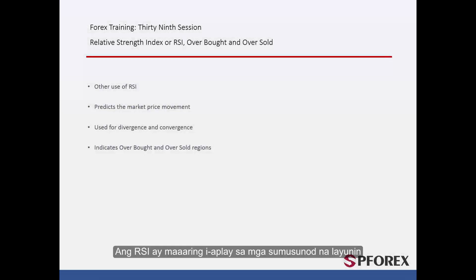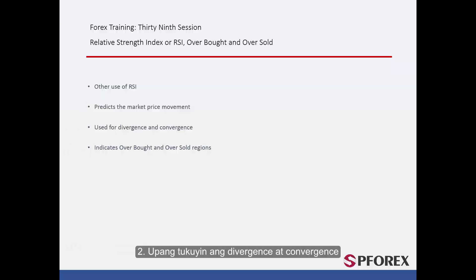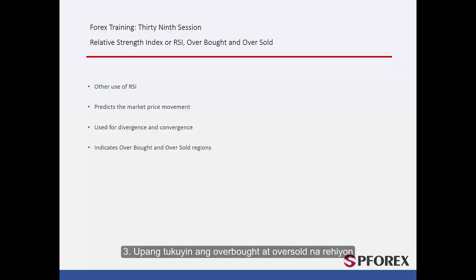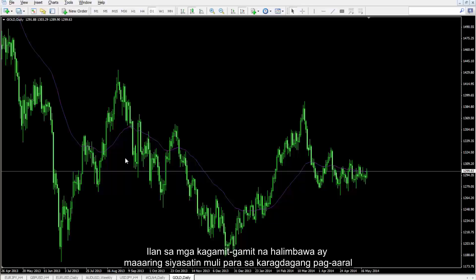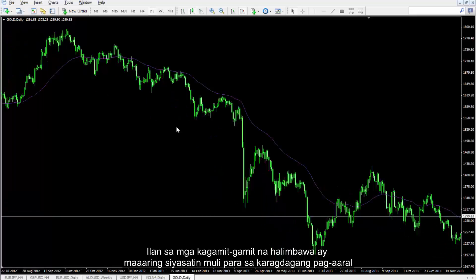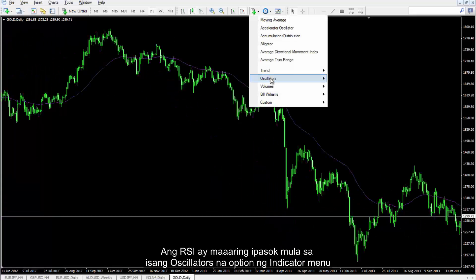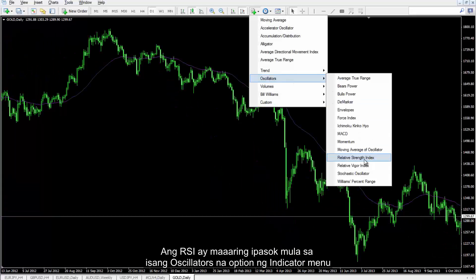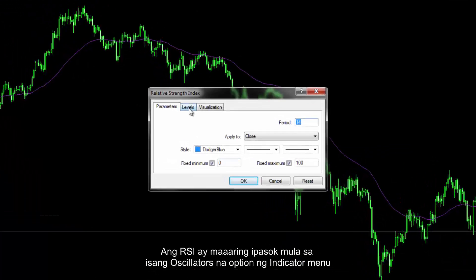RSI can be applied for the following purposes: first, to predict the reverse point of trends beforehand; second, to specify divergence and convergence; third, to indicate overbought and oversold regions. Patterns can also be applied on oscillator trends, and some useful examples can be reviewed for further study. RSI can be inserted from the oscillators option of the indicator menu.